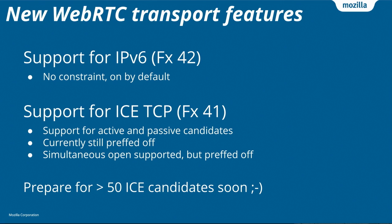We added support for ICE TCP in Firefox 41, but again this is pref off, so you need to go to about:config and switch a pref if you want to play with it. We're probably going to turn it on either in Firefox 43 or 44. What that means is if I make test calls in the office now, for a call with audio, video, and a data channel, you get easily over 50 ICE candidates, which is interesting — interesting to debug, interesting to watch.